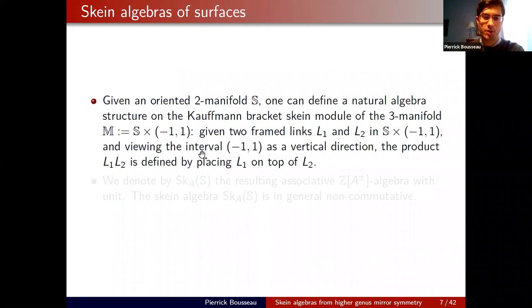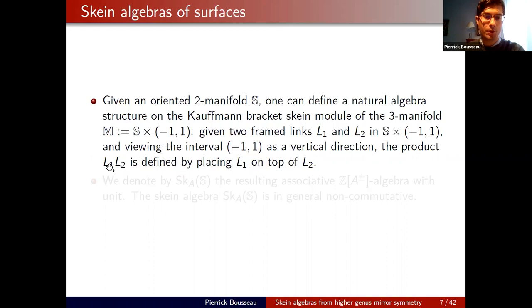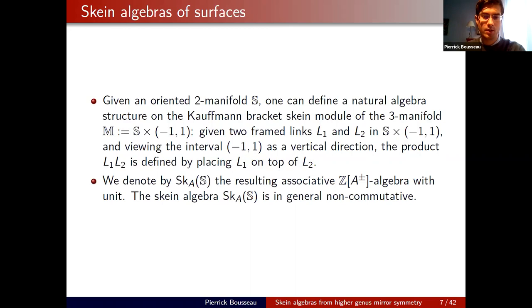If the 3-manifold has the form of a product of a surface Σ with an interval, the skein module acquires an extra algebra structure. Given two framed links L₁ and L₂ in Σ × I, one defines a new link by placing L₁ on top of L₂ — assuming L₂ lies in Σ × (−1, 0) and L₁ in Σ × (0, 1), their union defines the product. This product is obviously associative but non-commutative in general, giving the skein algebra of the surface.